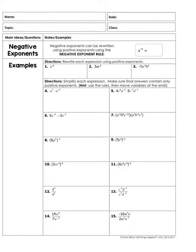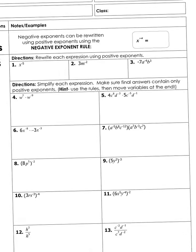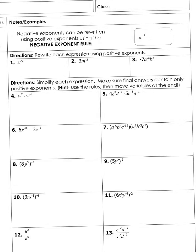Hello guys, today's video is on negative exponents. Negative exponents can be rewritten using a positive exponent using the following rule. If you have x to the negative a power, you can flip it over and write it as 1 over x to the positive a power. At all times, you want to make sure that you change everything that's negative to a positive exponent.